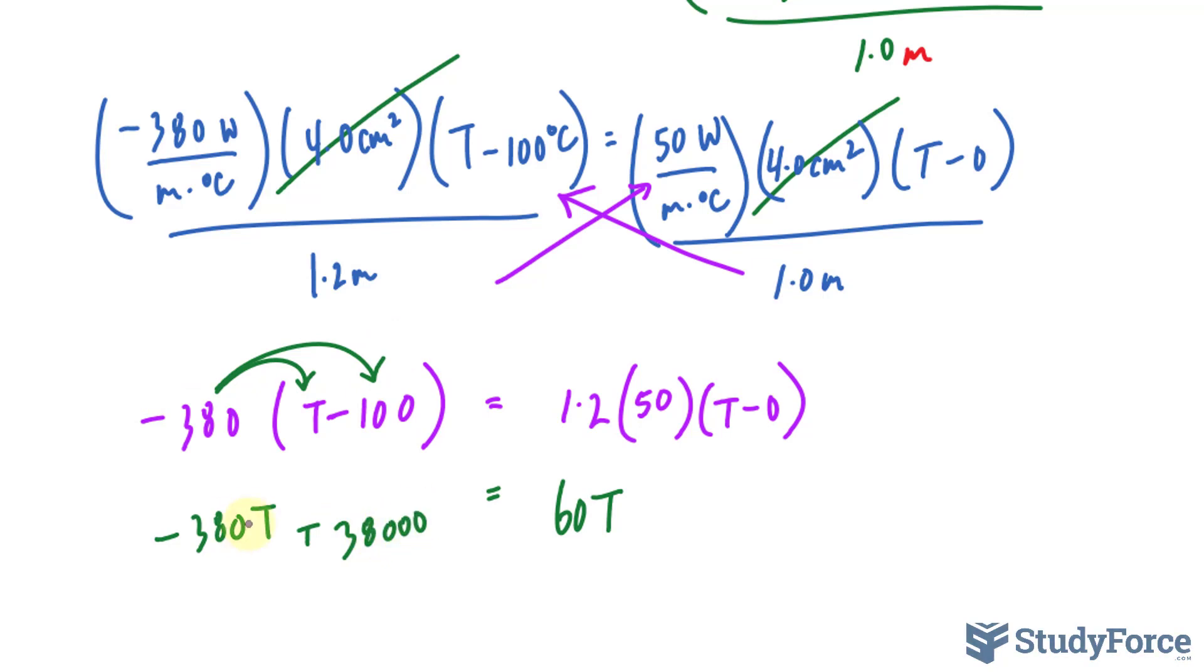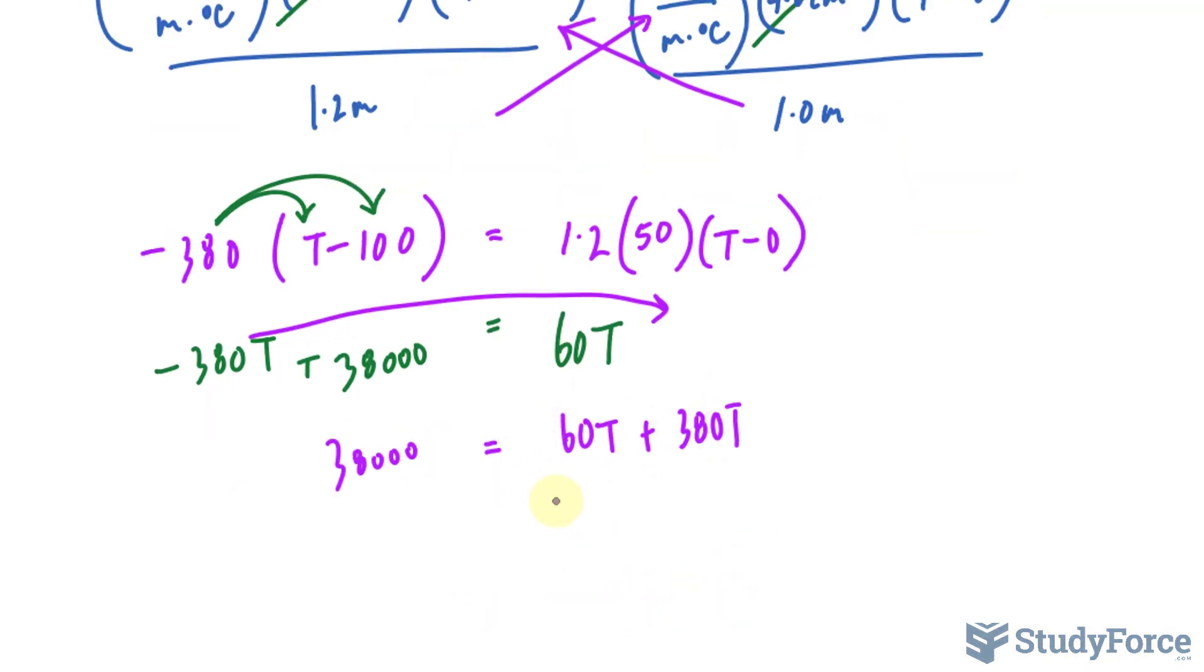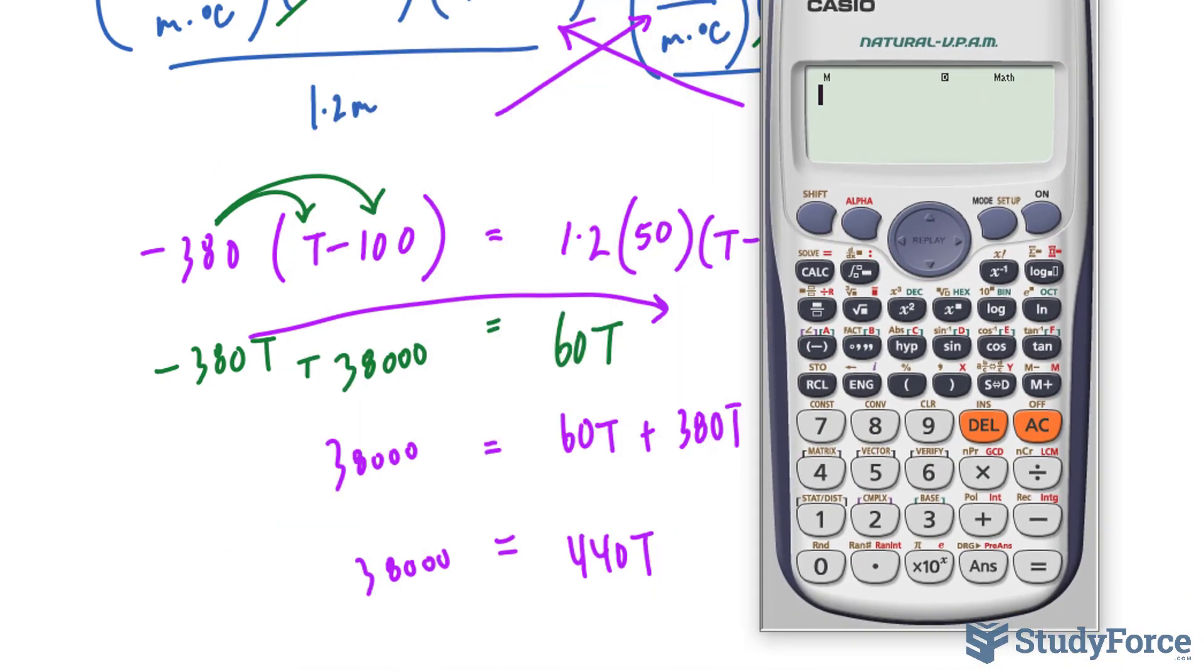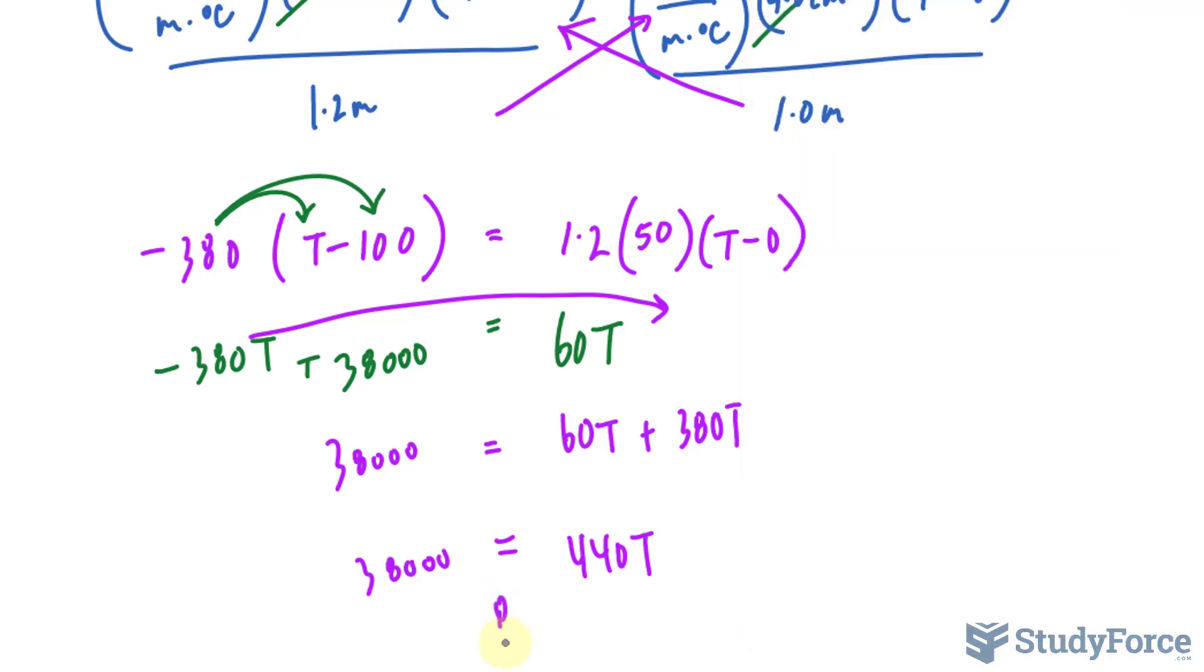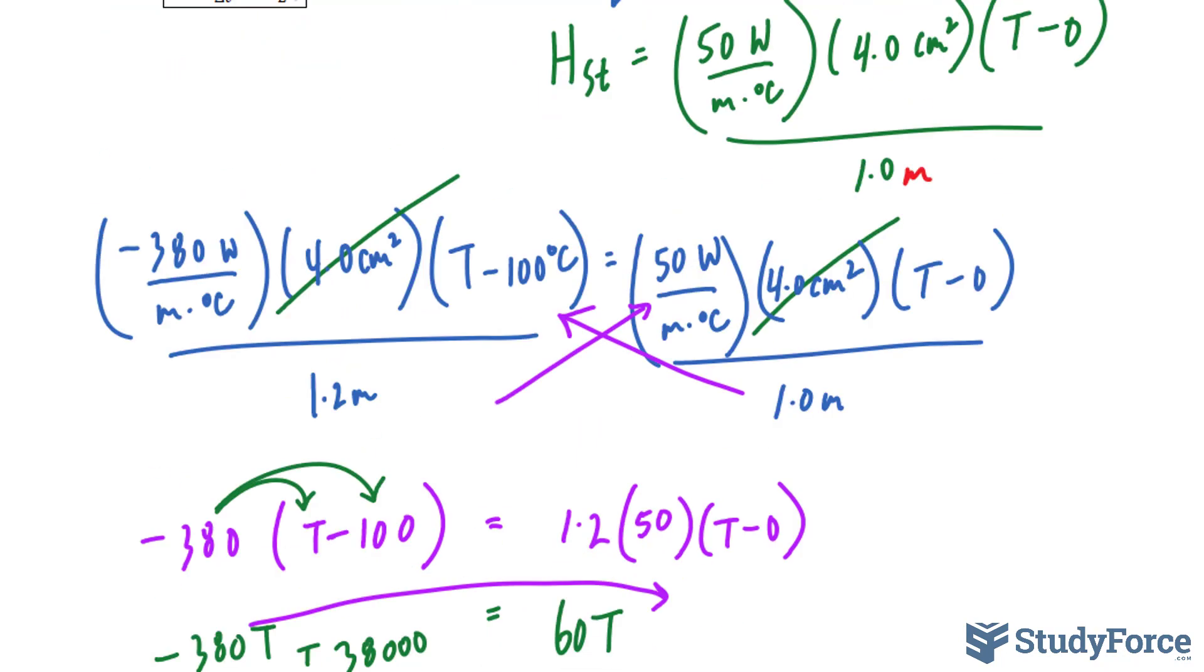38,000. I'll bring that T over, that term, 60T plus 380T. Combining these two, we get 440T. Then dividing both sides by 440 should give us our answer. So 38,000 divided by 440 makes 86 degrees. So that is the final temperature at the junction.